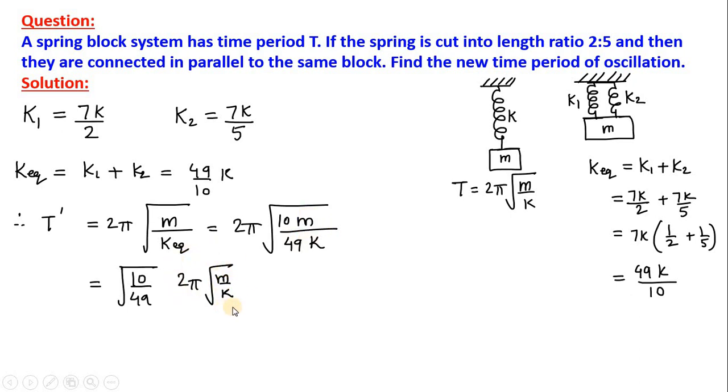But this quantity 2 pi root m by K is same as our original time period T. So, we can write down this as root 10 by 7 into T. So, the new time period T dash will be root 10 by 7 times of the original time period.